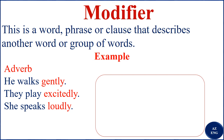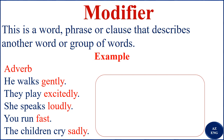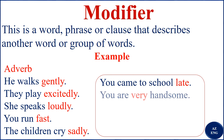'She speaks loudly' — 'loudly' is the modifier; it modifies 'speaks.' 'You run fast' — 'fast' is the modifier; it modifies 'run.' 'The children cry sadly' — 'sadly' is the modifier. 'You came to school late' — 'late' is the modifier. 'You are very handsome' — 'very' is the modifier because it modifies the adjective 'handsome.' Remember, adverbs modify not just verbs but also adjectives and other adverbs.